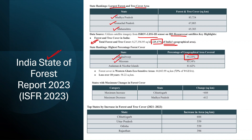The highest percentage of forest cover is found in Lakshadweep at 91% of its total geographical area, followed by Mizoram and then Andaman and Nicobar Islands. The Western Ghats eco-sensitive area has 73% of its total geographic area under tree and forest cover, but there has been a gradual decrease over the past 10 years. For maximum change in forest cover, the highest increase was witnessed in Chhattisgarh, while the maximum decrease is seen in Madhya Pradesh. States with maximum increase between 2021–2023 are Chhattisgarh, Uttar Pradesh, Odisha, and Rajasthan.